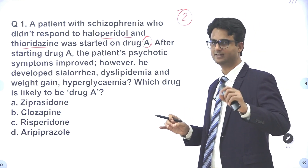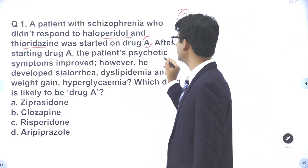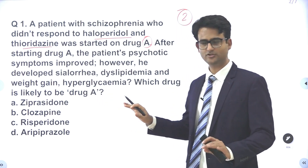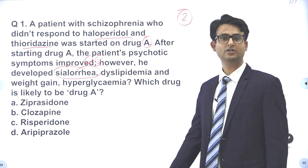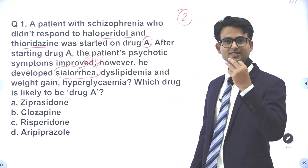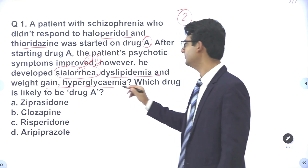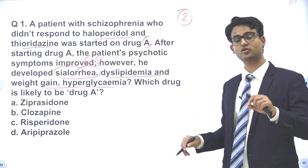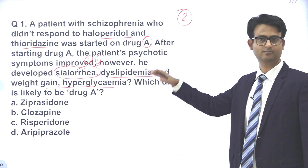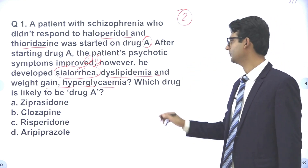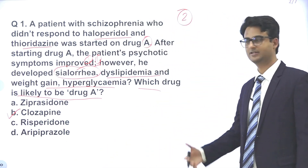What is the drug of choice for TRS? Clozapine. After starting drug A, the patient's psychotic symptoms improved. However, he developed sialorrhea — hypersalivation — which is commonly associated with Clozapine. Dyslipidemia, weight gain, and hyperglycemia: Clozapine is the antipsychotic most commonly associated with metabolic syndrome and maximum weight gain. So there are multiple indicators in this question pointing towards Clozapine. The answer is Clozapine. I hope you guys got it correct.